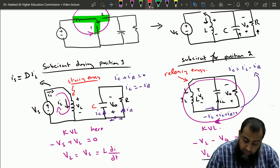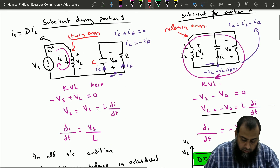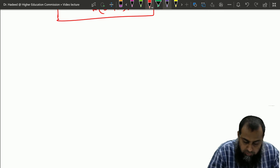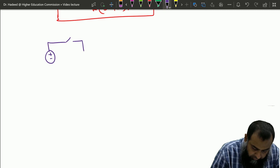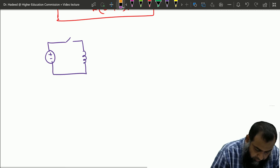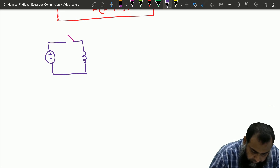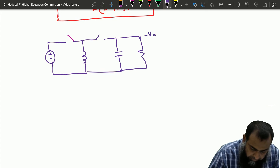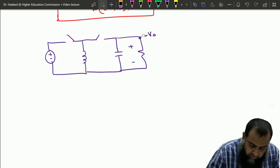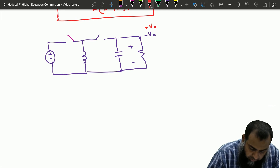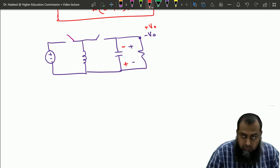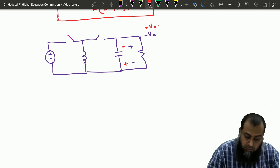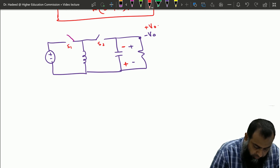Now we replace the single pole double throw switch with two single pole single throw switches S1 and S2. The circuit has S1 connected with the inductance, and S2 connected on the other side with the capacitor and load resistance R. The output is minus V0 with defined polarity. The condition S1 equals complement of S2 must be satisfied — when S1 is on, S2 is off, and vice versa — to properly emulate a SPDT switch.